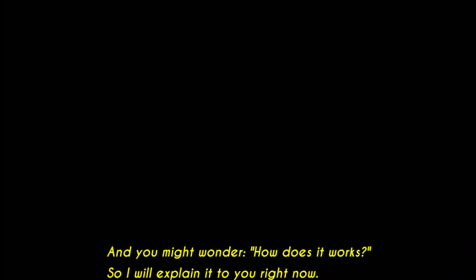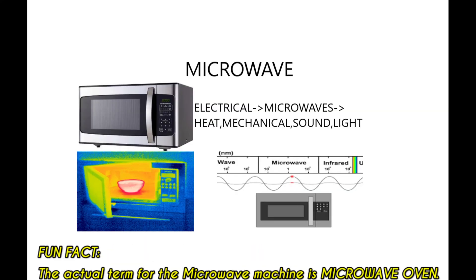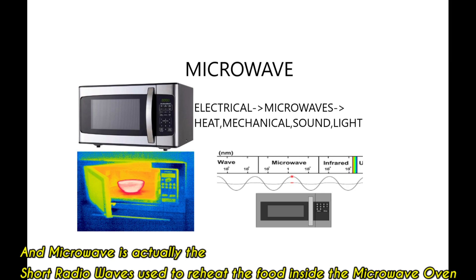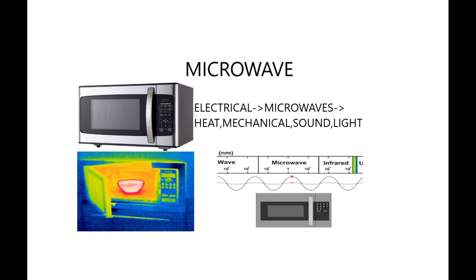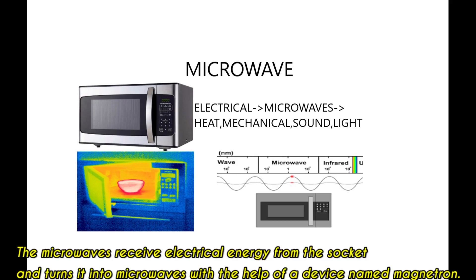You might wonder how a microwave works. Fun fact: the actual term for the microwave I used is a microwave oven, and microwaves are actually short radio waves used to reheat food inside the microwave oven. The microwave oven receives electrical energy from the socket and turns it into short radio waves known as microwaves with the help of a device called the magnetron.